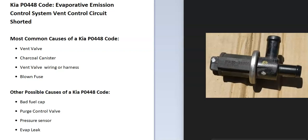Today I'm talking about Kia with the P0448 code — what it is and how you go about fixing it. The P0448 code is an evaporative emission control system vent control circuit shorted.